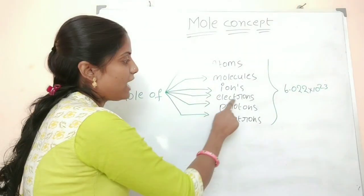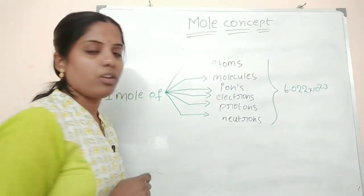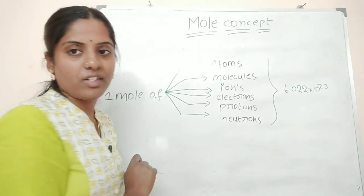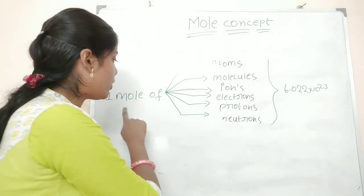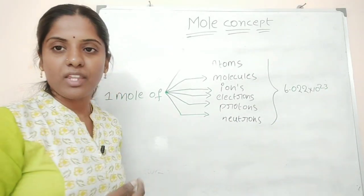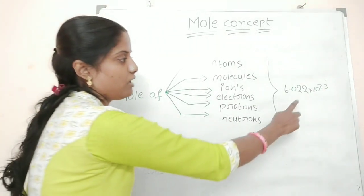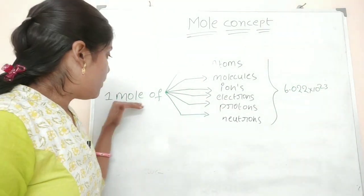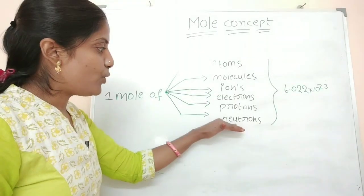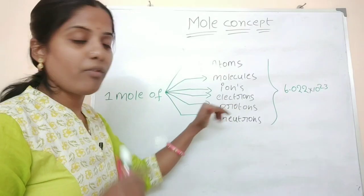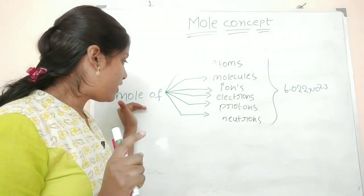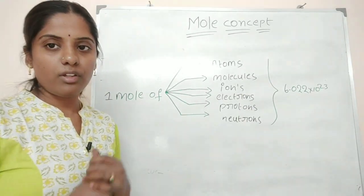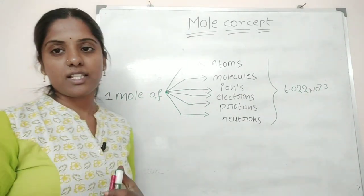One mole of electrons has Nₐ electrons. What about 2 moles of electrons? That is 2Nₐ electrons. Similarly, 1 mole of protons has Nₐ protons. So this is all about the mole concept.